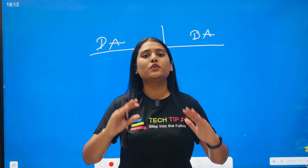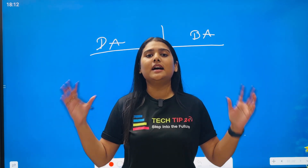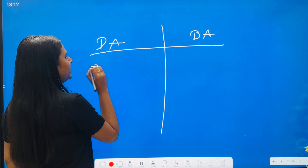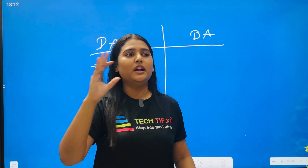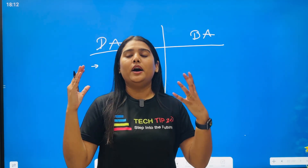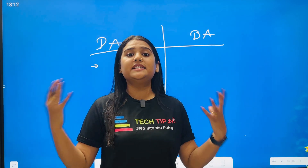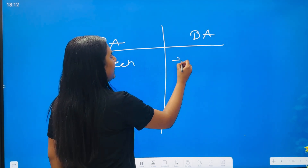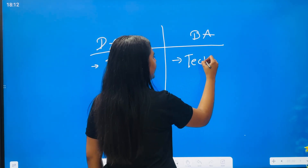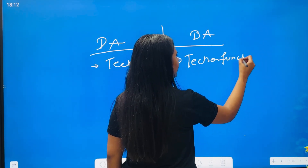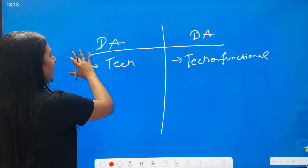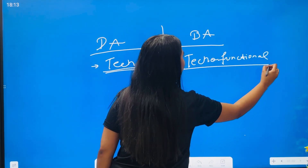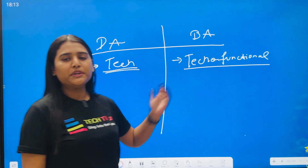Both are positions which are quite different. The roles and responsibilities are also quite different. When it comes to the data analyst position, they work core with proper data, understanding requirements of a client, working on reports, working on dashboards, understanding data. Data analyst is a technical profile, and business analyst is a techno-functional profile — and this definitely differs from company to company as well.